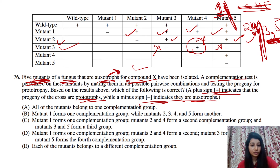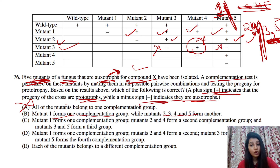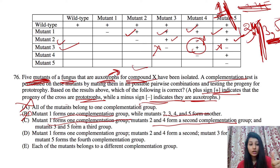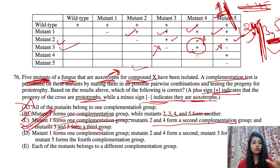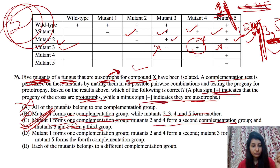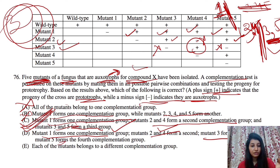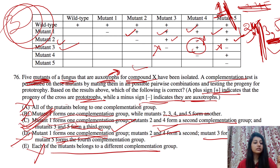Now evaluating the answer choices: the statement that all mutants belong to one complementation group is false — we found three groups. The statement that mutant 1 forms one complementation group (true), mutants 2 and 4 form a second complementation group (true), and mutants 3 and 5 form a third complementation group (true) — this is totally correct. That is the third statement. Statement C — mutant 1 forms one group, 2 forms a second, and mutants 3, 4, and 5 each form separate groups — is false. So the correct answer is the third statement.